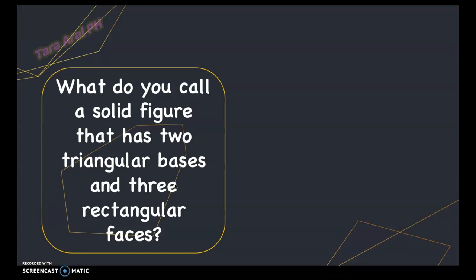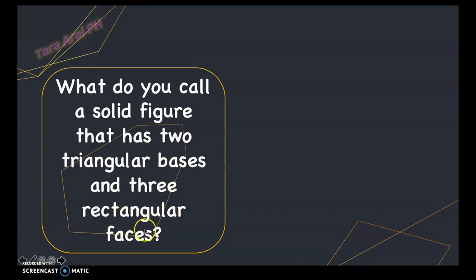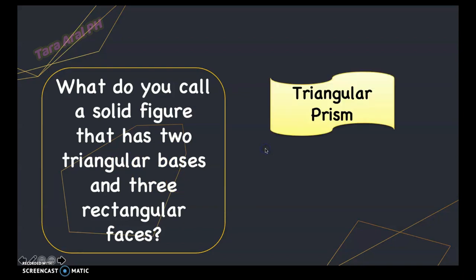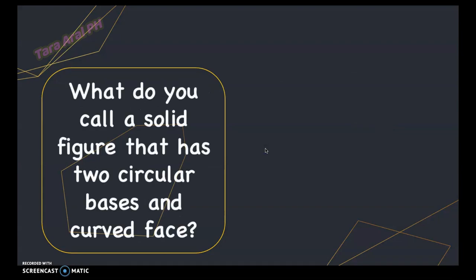Let's have more examples. What do you call a solid figure that has two triangular bases and three rectangular faces? Our keyword is two bases — that means it's a prism. Prisms have rectangular faces, and we name the prism by its base. Since there are two triangular bases, it is a triangular prism. Next: what do you call a solid figure that has two circular bases and curved faces? That means it's a cylinder.